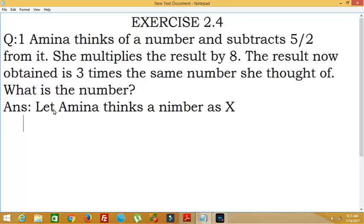First she subtracts that number by 5/2, that is x minus 5/2, and this result is multiplied by 8, that is (x - 5/2) × 8. The result obtained is 3 times the number she thought, so (x - 5/2) × 8 = 3x.